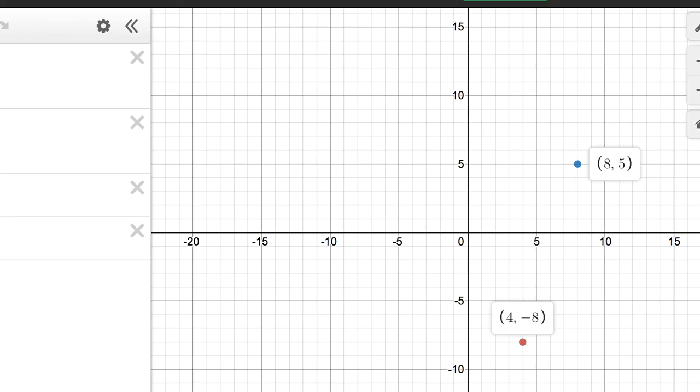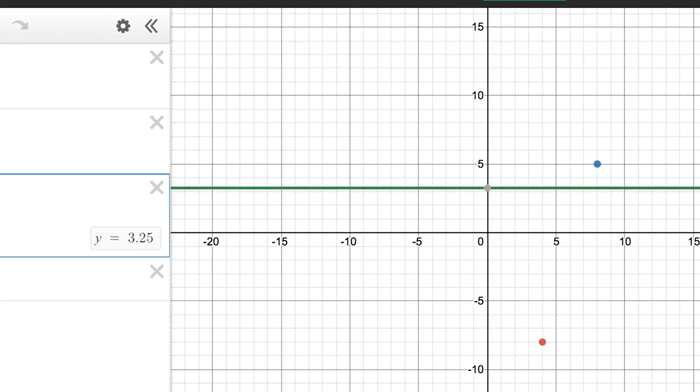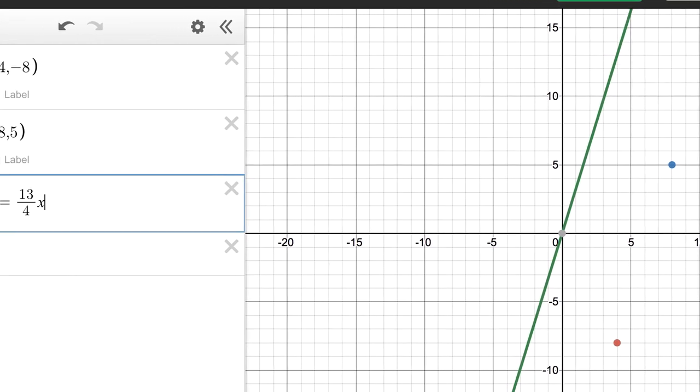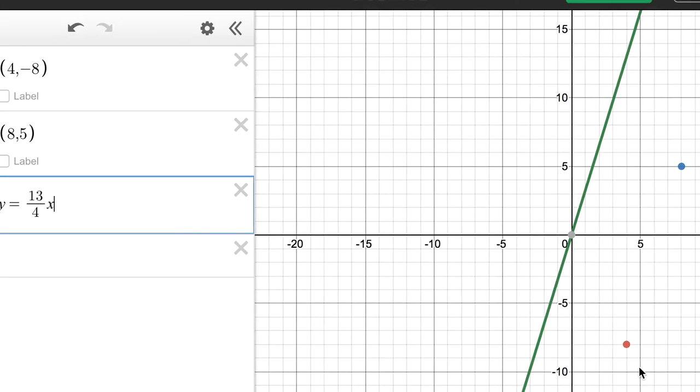And what we've basically just done is we have figured out the slope. So this is a line y equals 13 over 4x. And you can see this green line, if we shift it over to the right, it's got the right slope to be able to pass through the red and the blue points.